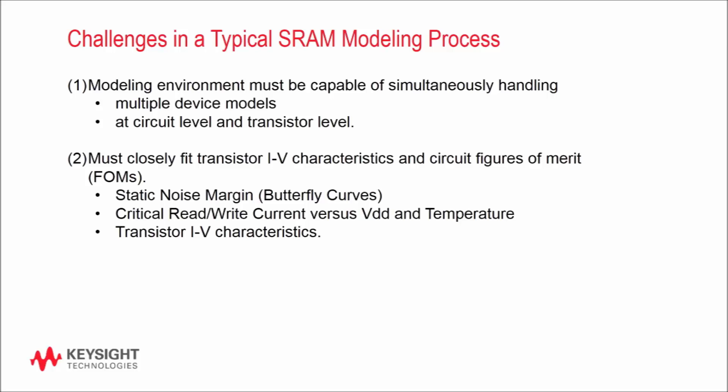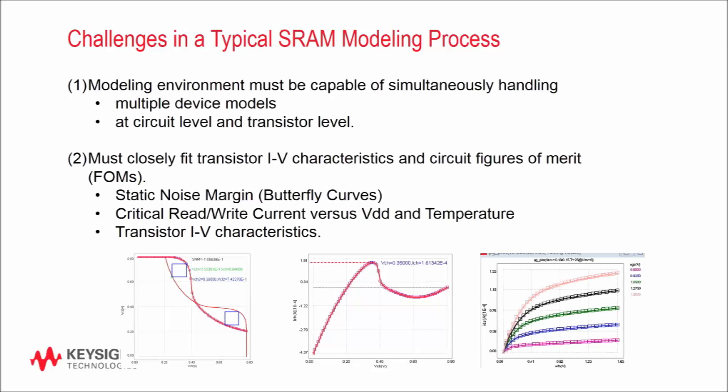Another challenge you will face stems from the fact that there are individual device IV curves and circuit figures of merit. As a result, the model needs to match major data in both categories. Device model parameters are adjusted for figures of merit, such as the static noise margin and critical read write current. This means you will need to create and view both graphs at once and iterate between the SRAM level and the single transistor level.